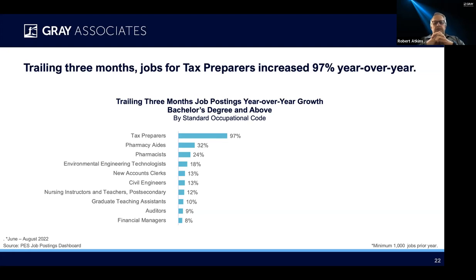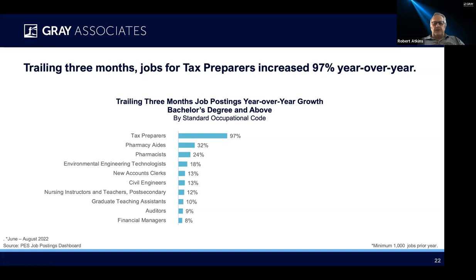Then we see a couple of pharmacy things — pharmacy aides and pharmacists up 24 and 32%. This is consistent with my recent observations. I went in to get my booster shot, and the line was long at the pharmacy. The pharmacist said the reason was that he was covering both giving the shots as well as the back of the desk. They couldn't hire people to fill those jobs at CVS. So there's a real shortage here, both at the pharmacist and the assistant level. Environmental engineering technologists are next. You see another engineer there — civil engineers. And then we see nursing instructors. This has been a problem for a long time, up 12%. One of the reasons we don't have more nurses is we can't find the nursing instructors to teach them. So an important bottleneck there for nursing programs and ultimately for the healthcare industry as a whole. And then we have graduate teaching assistants, auditors, and finally financial managers.